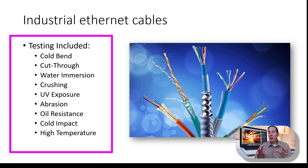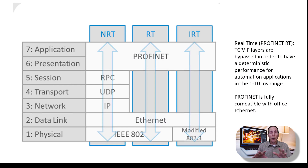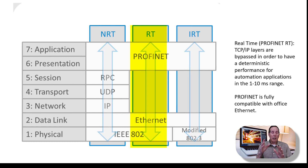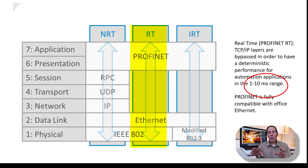They are not your typical cables that we put in our cozy little offices. One of the protocols used by industrial Ethernet is called real-time PROFINET, and it basically eliminates TCP/IP entirely, yet it's totally compatible with normal Ethernet. It allows their applications to get performance up to 1 to 10 milliseconds.